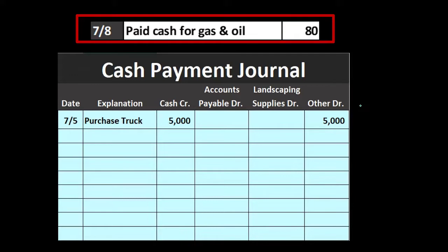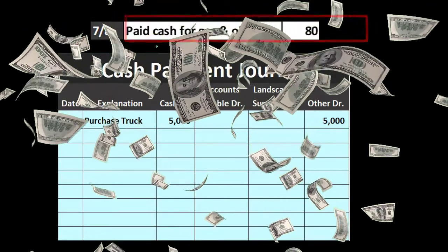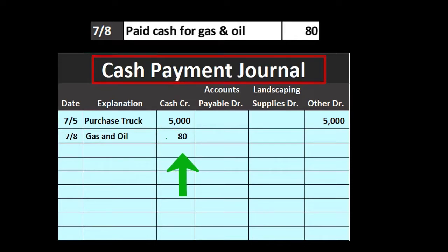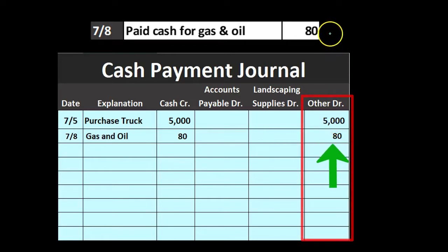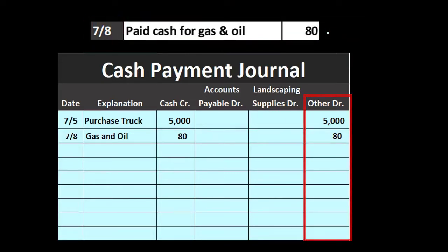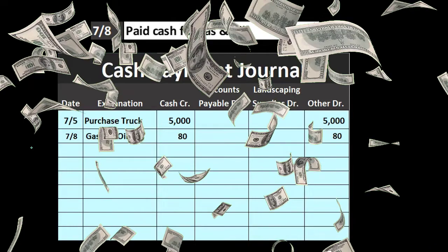Next transaction: paid cash for gas and oil, $80. Anything that says 'paid cash' belongs in the cash payment journal. Cash is always going down, so we will always be crediting the cash column in the cash payment journal. The other side goes to 'other' because a cash payment for gas and oil is possibly not the most common transaction type. If it were common, we would break out a dedicated column for it; if not, we put it in 'other.'